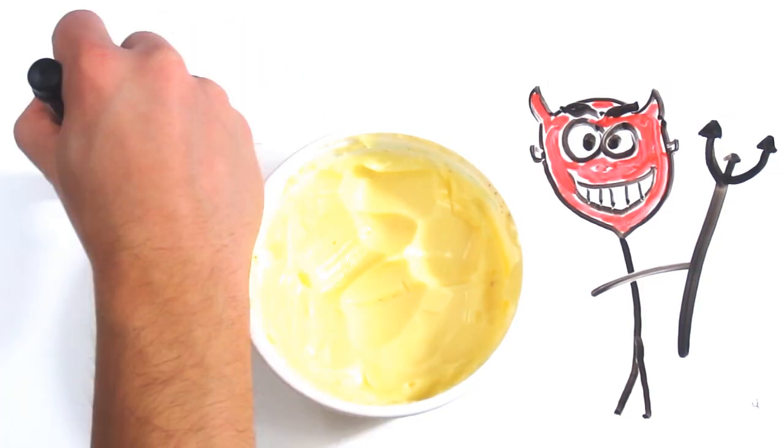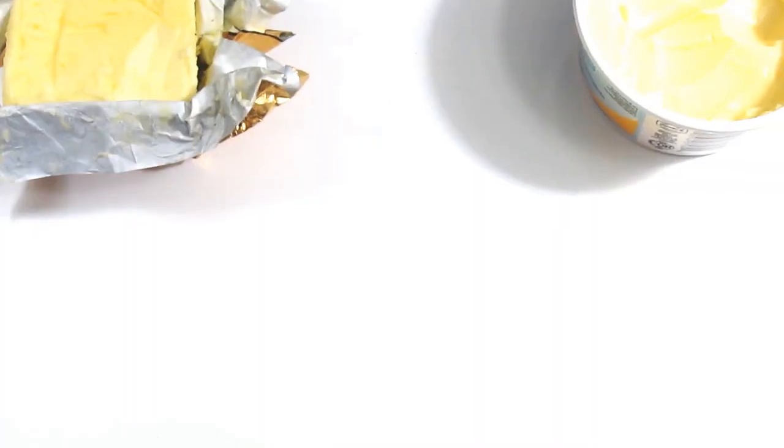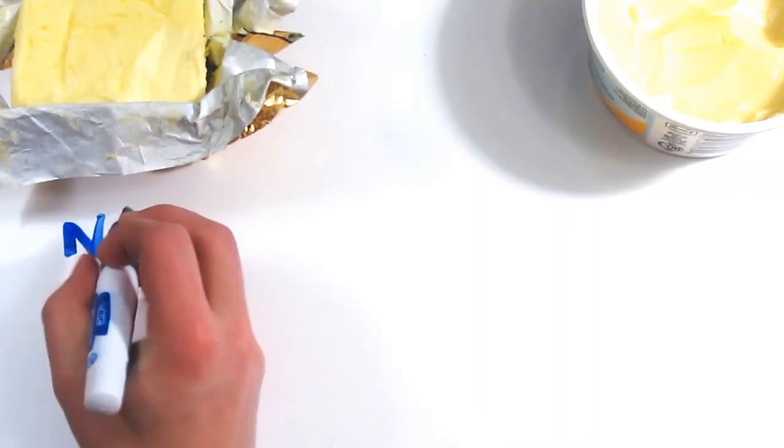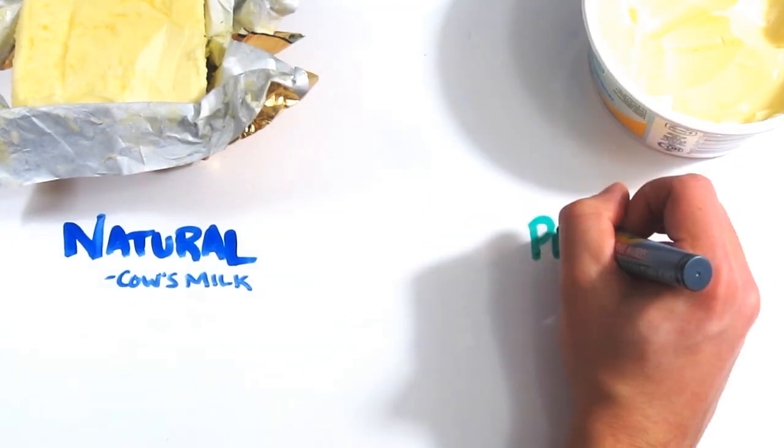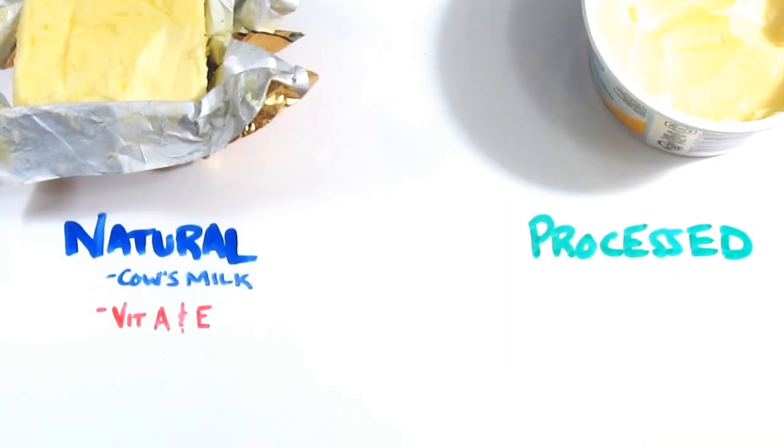But the truth is, many margarine companies claim to be trans fat free nowadays, and some are. At the end of the day, if we compare them side by side, there are pros and cons for each. Butter is completely natural and typically made from one ingredient, whereas margarine is processed and has many ingredients. Butter also has some essential vitamins and minerals, such as vitamin A and E.